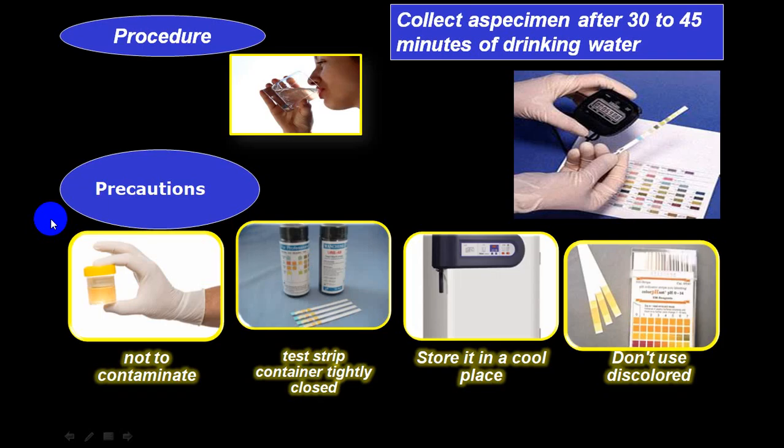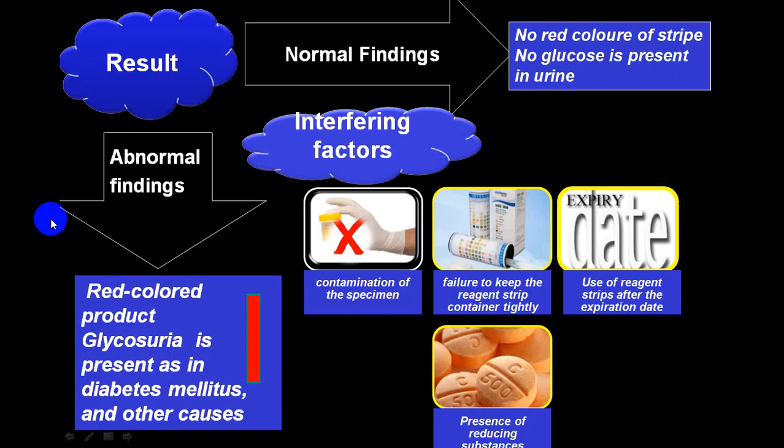The test must be done with caution — there should be no contamination. The strips should be kept in a tightly closed container, stored in a cool place. Do not use discolored strips. Results should be read within 30 to 45 minutes after urine collection. If you find an abnormal result, it may favor diabetes mellitus or other causes, so always rule out interfering factors, including drugs, and always check the expiry date on the strips.